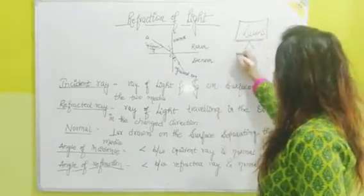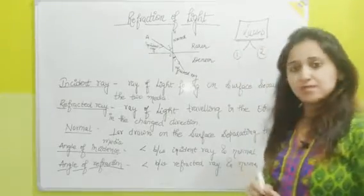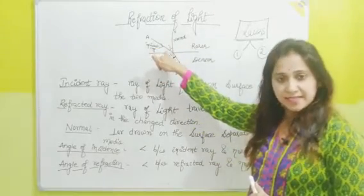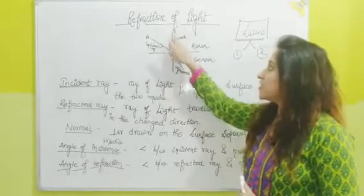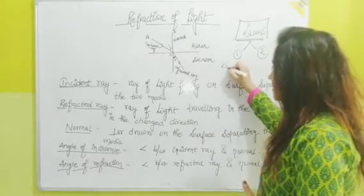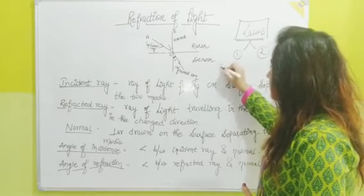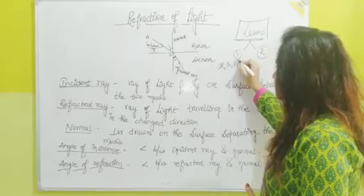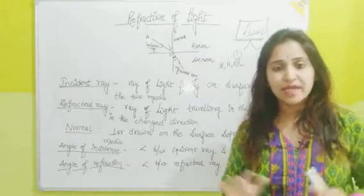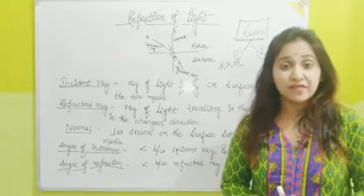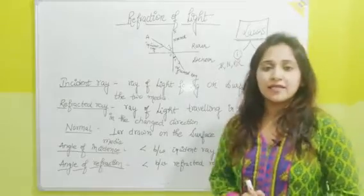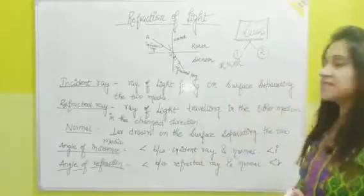There are two laws of Refraction of Light. The first law: as we can see in the diagram, when a ray is coming — that is the Incident Ray — and when it bends, that is the Refracted Ray, and the perpendicular between them is the Normal. The first law states that the Incident Ray, Normal, and Refracted Ray all lie in the same plane. This is the first law of Refraction of Light.